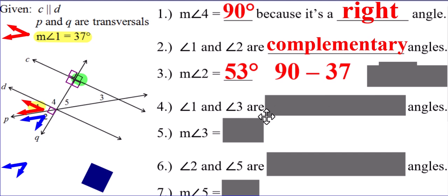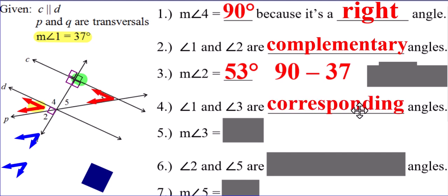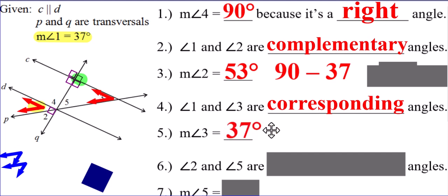What about angles one and three? They're congruent, but what type of angles are they? They're actually in matching positions. Angle one is kind of in this left corner. Angle three is in that same type of corner but on the other side of the picture. Angles in matching positions are called corresponding angles. That might have been a little tricky to see — it's a lot easier to find corresponding angles when there's only one transversal. Here we have two lines, P and Q, but angles one and three are corresponding angles. And now that you know they're corresponding angles, we can easily get the measure of angle three — it is going to be congruent to angle one, 37 degrees.